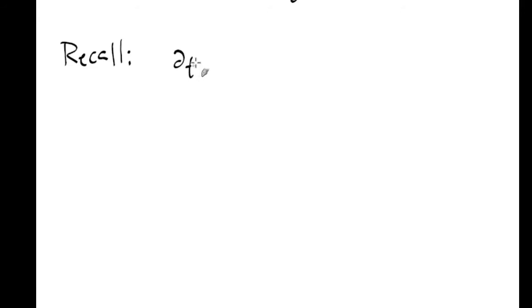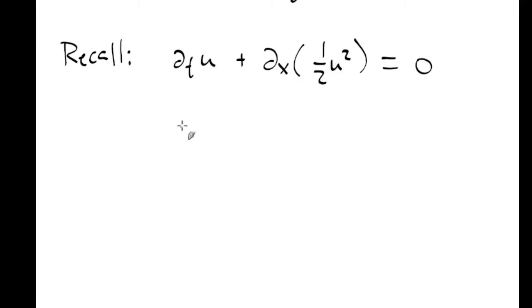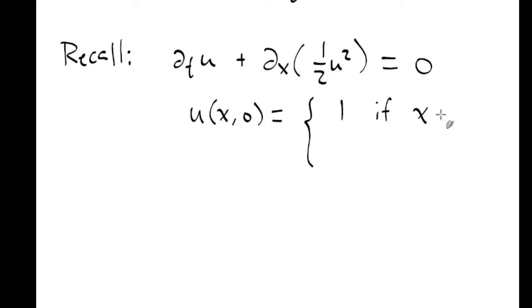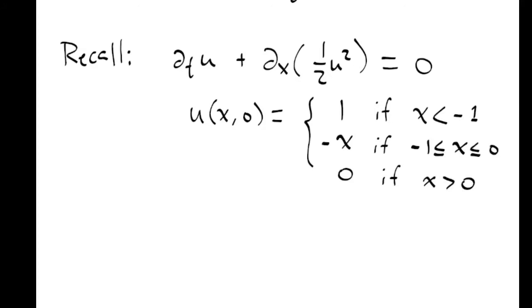Let's recall what we did in the previous video. We were interested in solving this PDE: the time derivative of u plus the spatial derivative of one-half u squared equals zero. Our initial condition was the piecewise function: 1 if x is less than minus one, minus x if x is between minus one and zero, and zero if x is greater than zero.